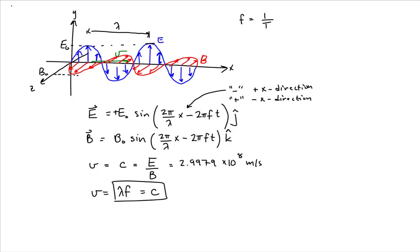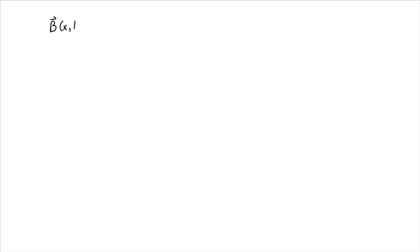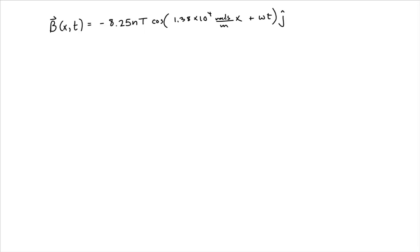Let's now work on solving the problem that we were given. Here we are given a magnetic field that varies as a function of position along the x-axis and time. The magnetic field is equal to minus 8.25 nanoteslas cosine of 1.38 times 10 to the fourth radians per meter x plus omega t along the y-axis. Our goal is to figure out which direction the wave is traveling, what the frequency of the wave is, and write the vector equation for the electric field based off of this. The first thing I want to do, however, is interpret the information we have here.